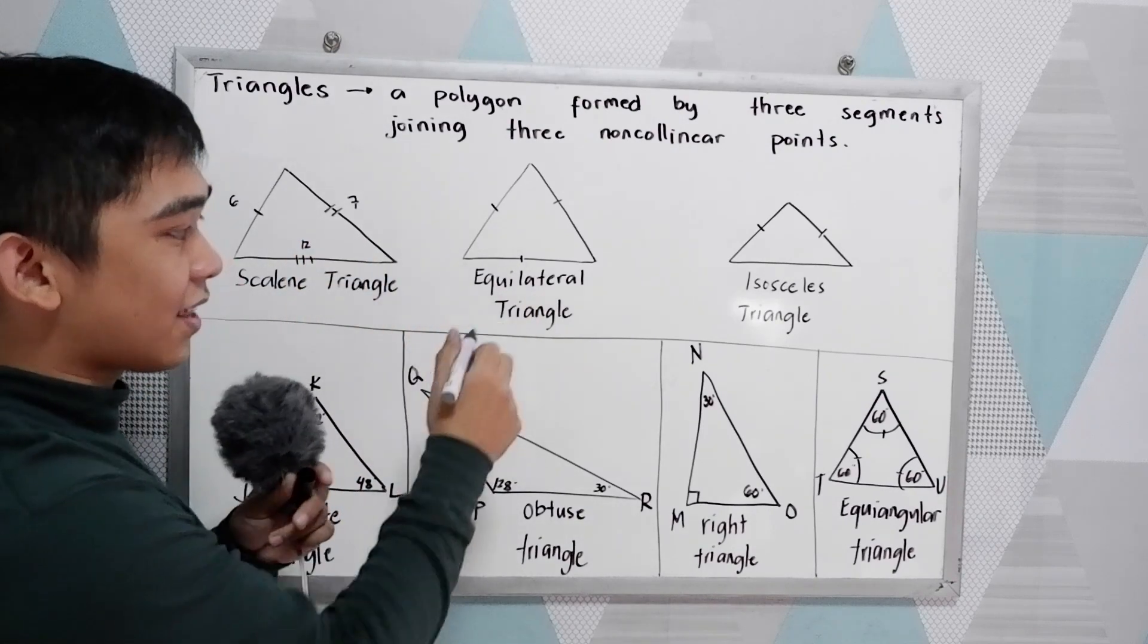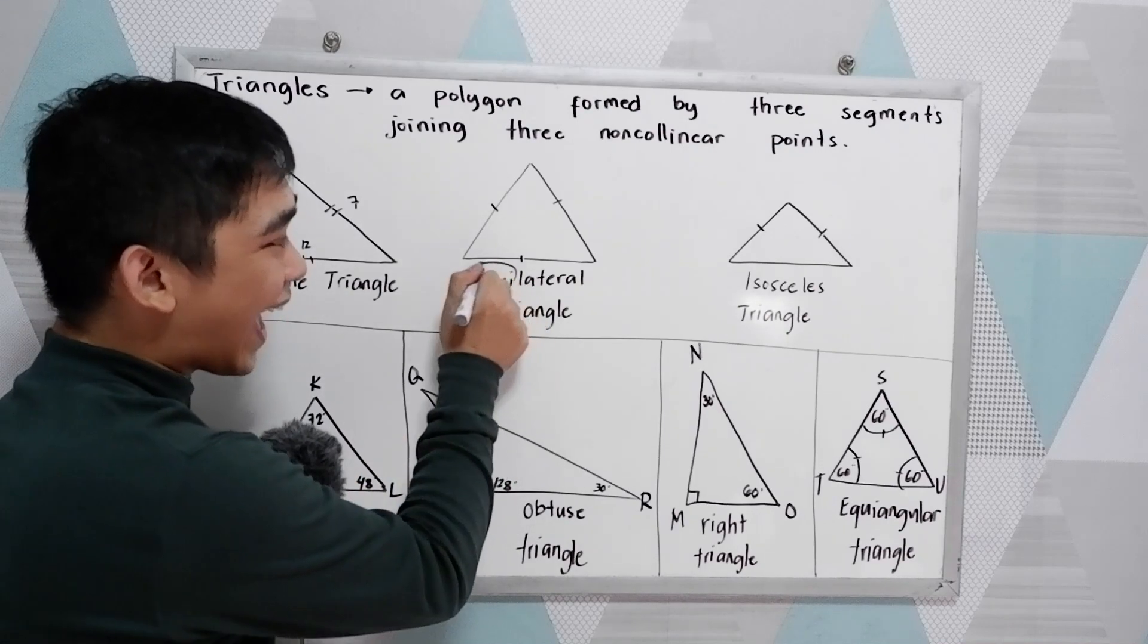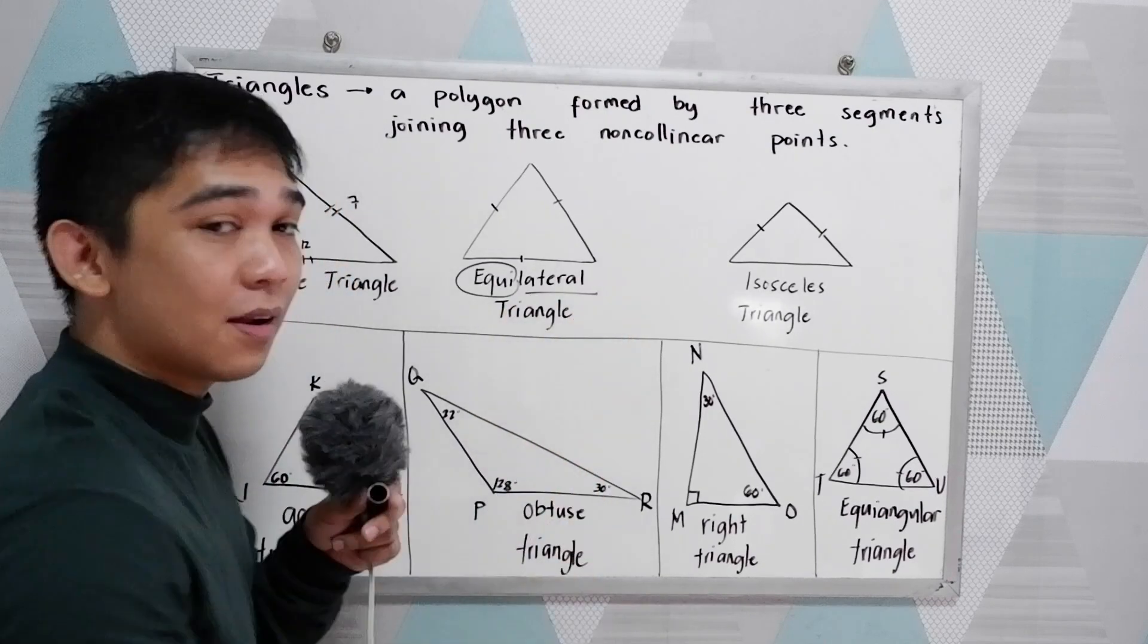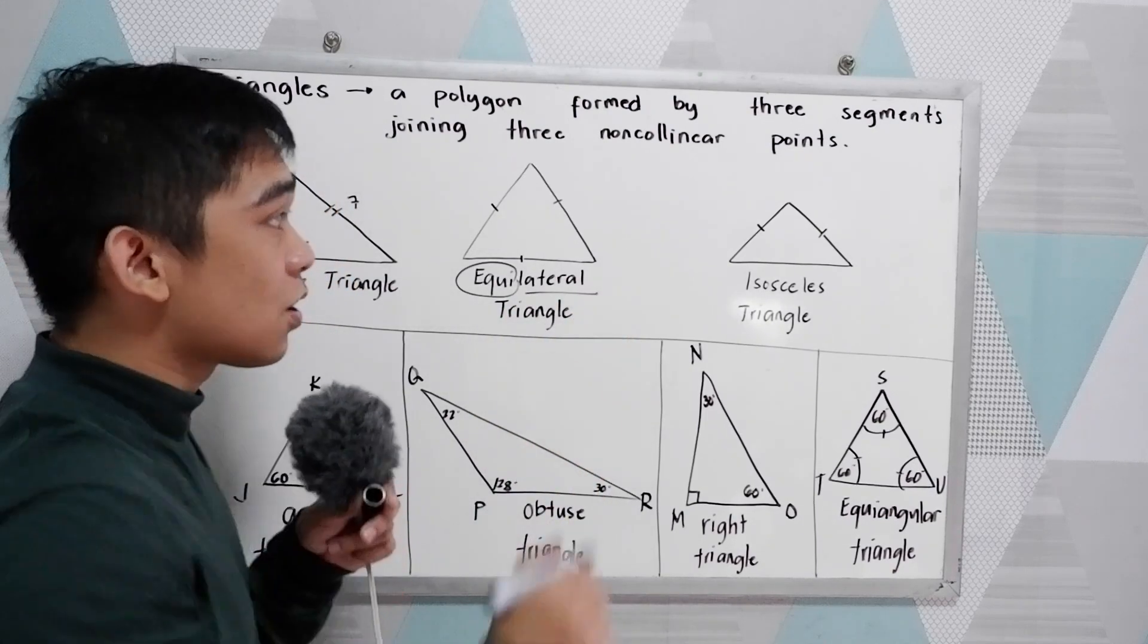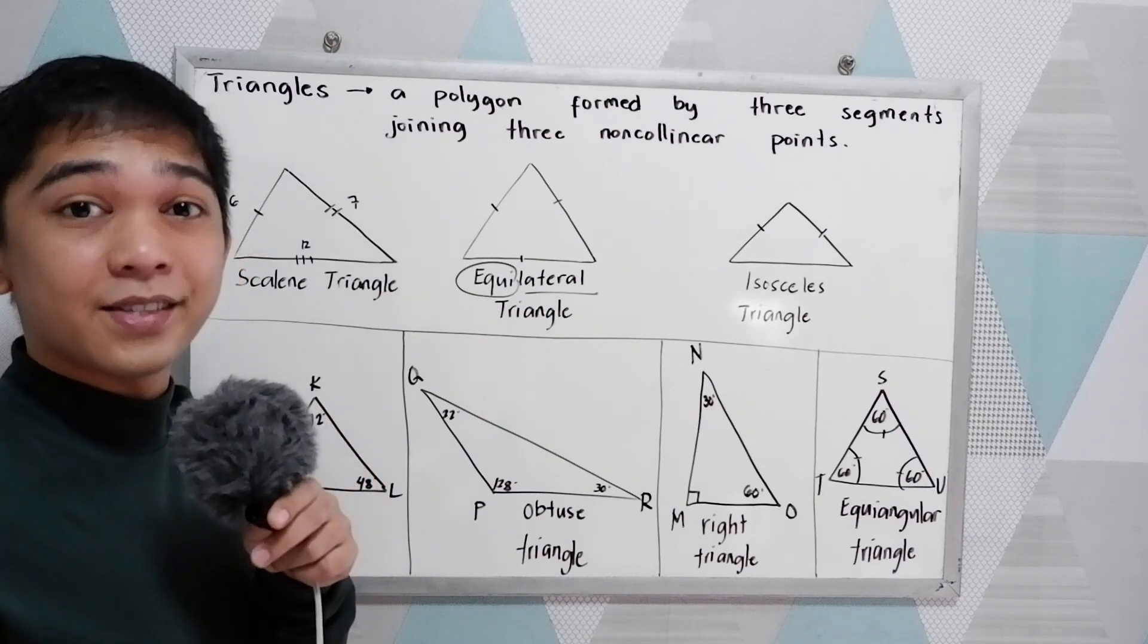Next will be equilateral triangle. When we say equilateral, equi means equal, lateral means sides. That means all the sides are congruent or all the sides are equal.